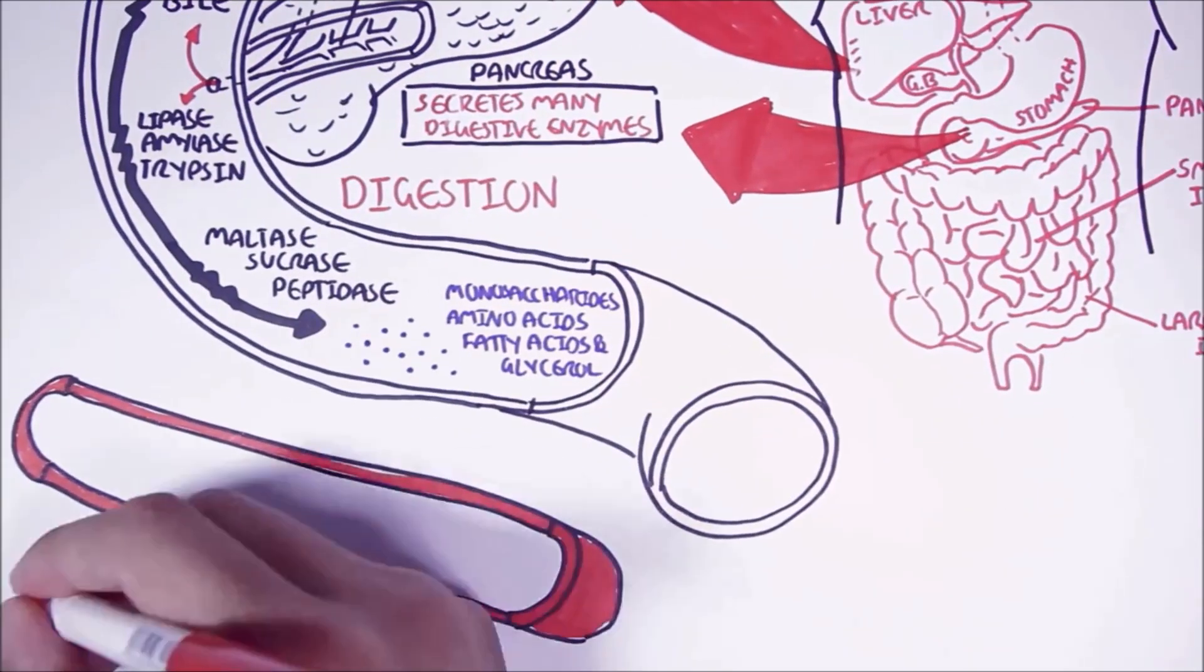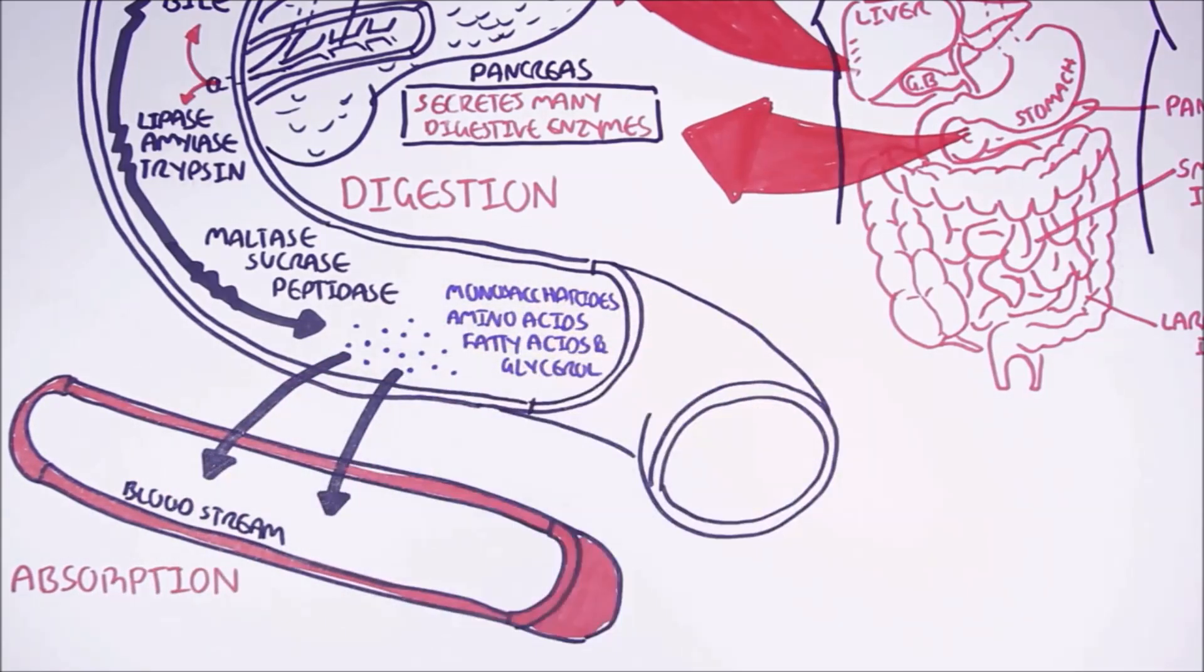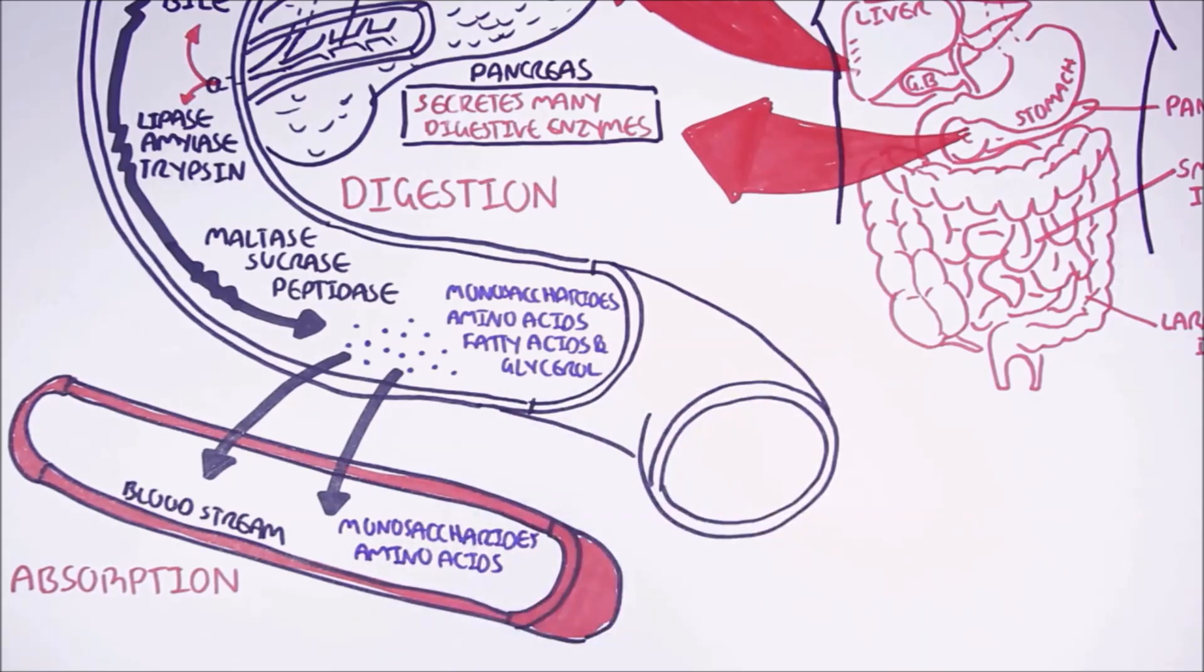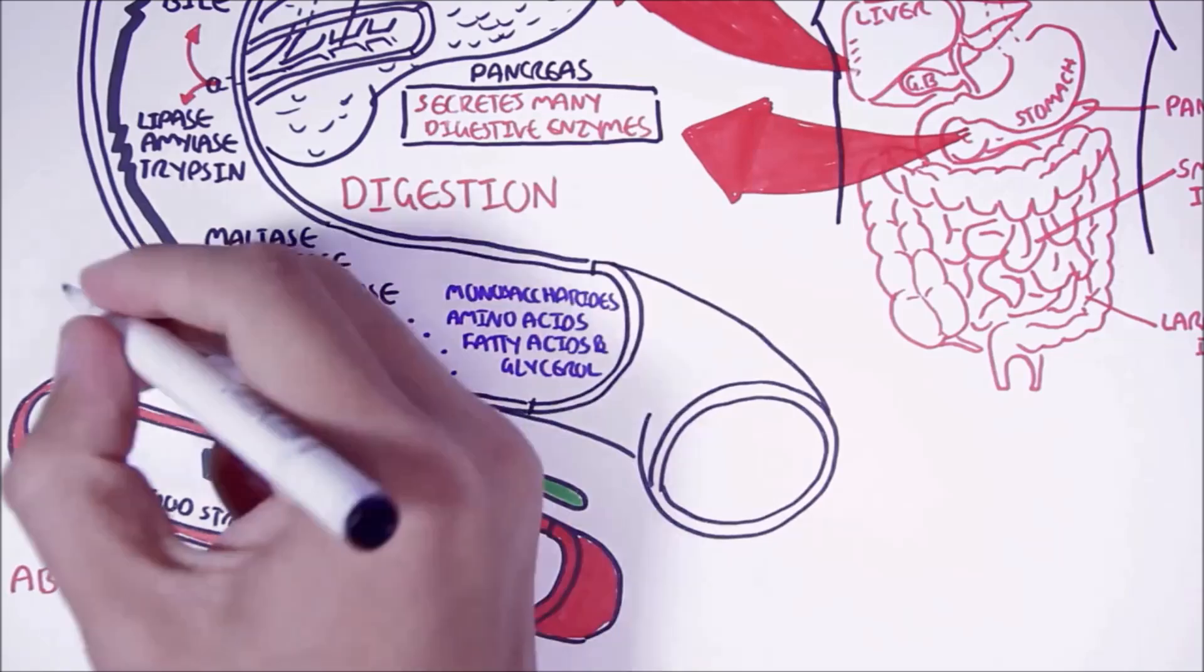The monosaccharides and amino acids are able to be absorbed by the small intestine into the bloodstream where it will then travel to specific areas in the body. The fatty acids are absorbed by the small intestine into the lymphatics with the help of bile.